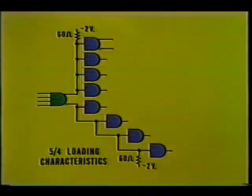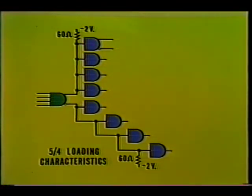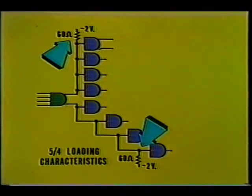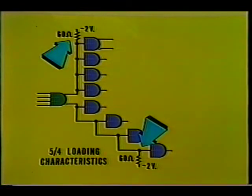Each output, both normal and inverted, can drive four loads, as long as those loads are on the same module. Each output must be tied through a 60 ohm resistor to minus 2 volts. The resistor is called a pull-up resistor and in conjunction with the chip produces the 1 and 0 logic levels. The resistor and minus 2 volts produce the voltage source, and the chip drives the line towards ground for a logic 0 or leaves it open for a logic 1.